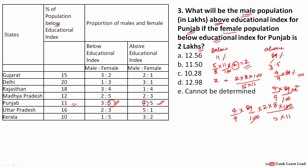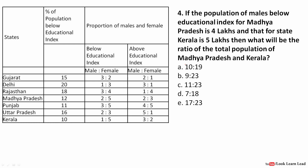Approximating 89 as 90 to simplify, we get 16 × 8 / 11 = 128/11 ≈ 11.6. The closest answer option is 11.50, so that is the answer. Approximating values like this saves time and allows you to identify the closest answer option.